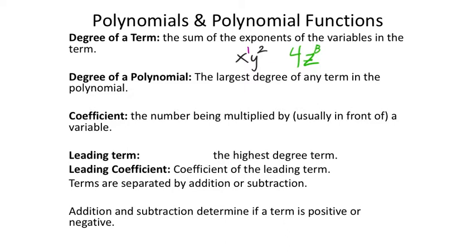The degree of a polynomial is just the largest degree of any of its terms — the highest degree among all terms. A coefficient is a number being multiplied by a variable — x, y, z, m, n, a, b — any number multiplied by a variable. The leading term is the highest degree term, and the leading coefficient is just the coefficient of that leading term.